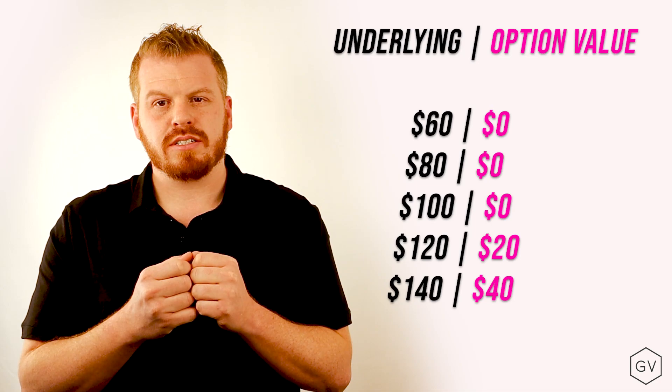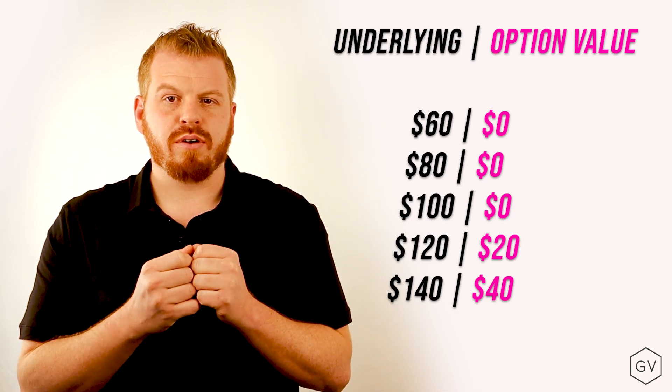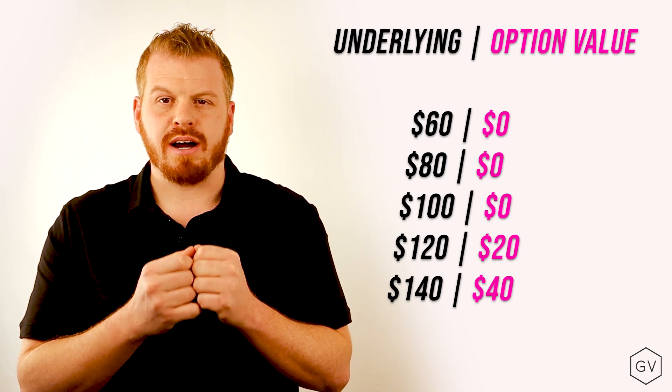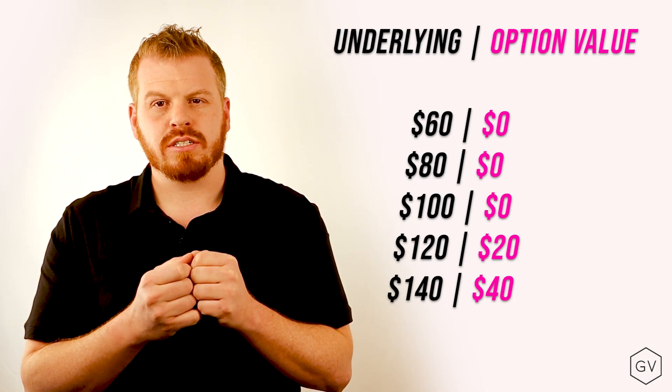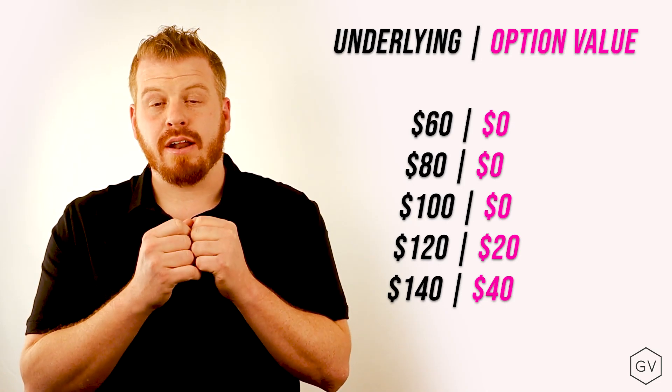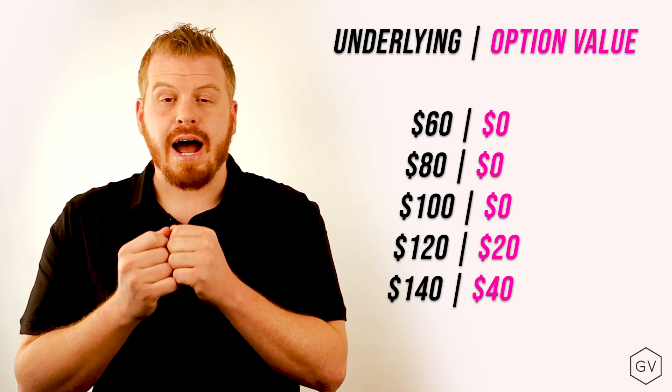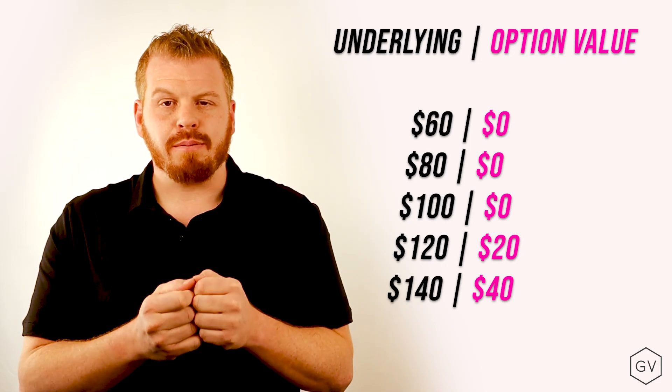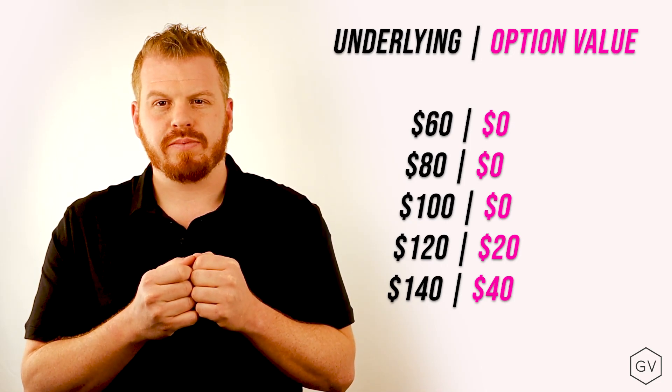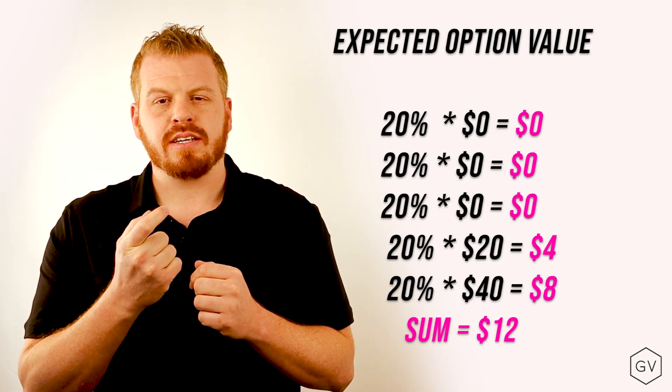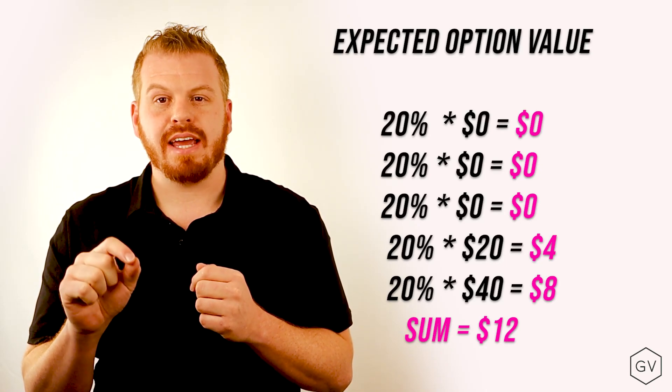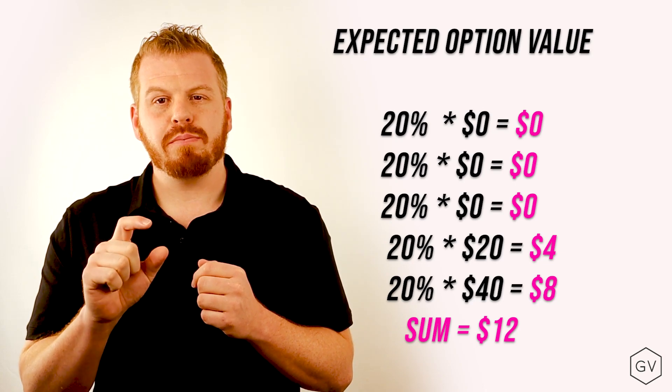Taking all this together and ignoring the effect of interest rates, let's calculate the expected value of this option. If the underlying is at $60, the option will expire worthless. At $80, it will expire worthless. At $100, it will expire worthless. At $120, the option will expire with $20 of intrinsic value. At $140, the option will expire with $40 of intrinsic value. So the expected value of this option, which is the probability weighted of the outcomes, is going to be $12.